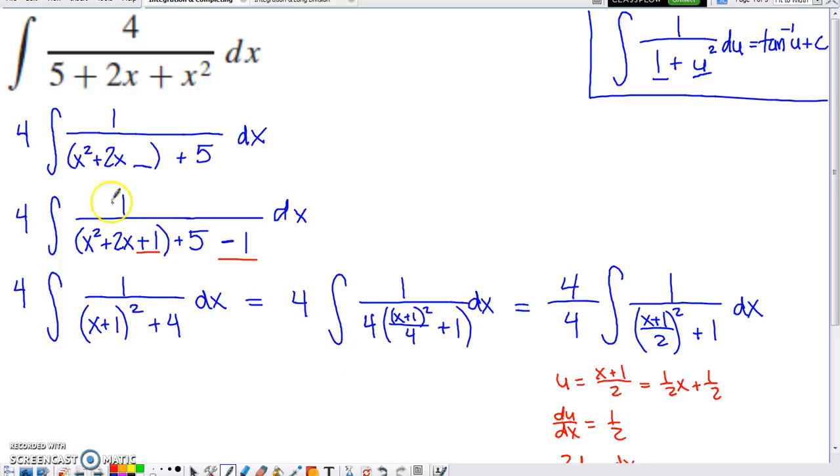I've already got a 4 out there from early on in the problem. And now I'm going to have an over 4 out there. So this is actually kind of nice because that's going to just reduce to a 1 on the next line.